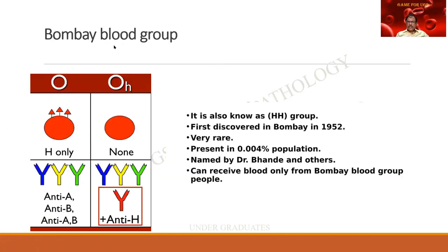The Bombay blood group, otherwise called the HH group, was first discovered in Bombay and is extremely rare. Discovered by Dr. Bande and others, a patient with Bombay blood group can receive blood only from a donor with a Bombay blood group. In the normal O group, only H antigen is present and there are no anti-A, anti-B, or anti-AB antibodies, making it a universal donor. In the Bombay blood group, even H antigen is absent, so these patients have anti-H antibodies and any other blood will cause clumping.